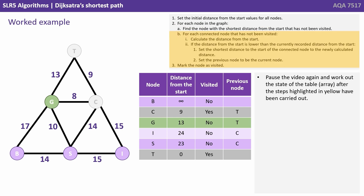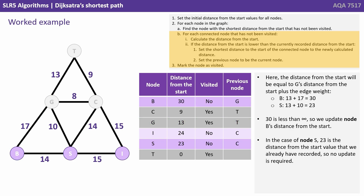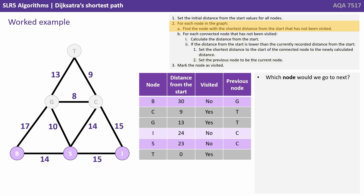Node G would be next as it has the shortest distance from the start of all remaining unvisited nodes — that's 13. Pause the video and work out the state of the table. The nodes connected to G that have not yet been visited are B and S. The distance from the start equals G's distance plus the edge weight: 30 for B and 23 for S. Since 30 is less than infinity, we update node B's distance from the start. But for node S, 23 equals the value already recorded, so no update is required. Node S would be next with the shortest distance of 23.